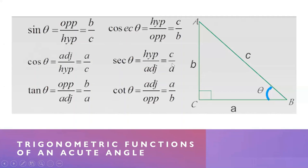Suppose we have a right triangle. Angle C is the 90-degree angle, and angles A and B are its two acute angles. Side C is the hypotenuse — the longest side of the right triangle, which is always opposite the 90-degree angle — while sides A and B are its two other legs.